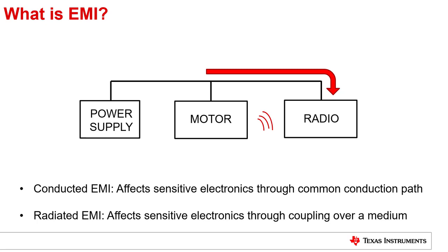Electromagnetic interference can manifest itself in two forms. As illustrated by this diagram, the sensitive system — which in this case is the radio — is affected through conductive means by the interfering motor since they both share the same outlet for power. The motor also affects the working of the radio through electromagnetic radiation that's coupled over the air and picked up by the radio's antenna. When end equipment manufacturers integrate components from various sources, the only way to guarantee that the interfering and sensitive circuits can coexist is through the establishment of a common set of rules where the interference is limited to a certain level and the sensitive circuits are capable of handling that level of interference.